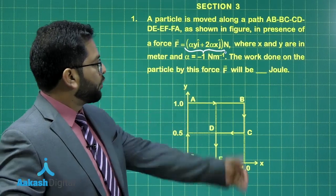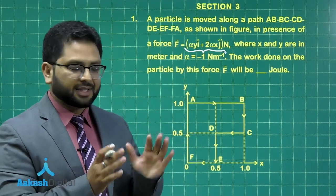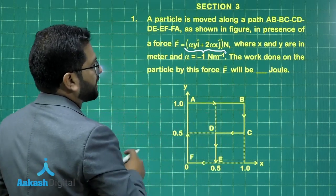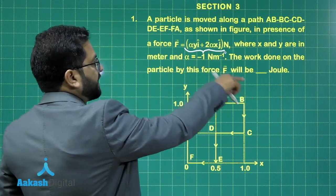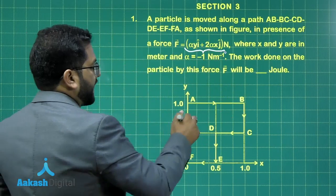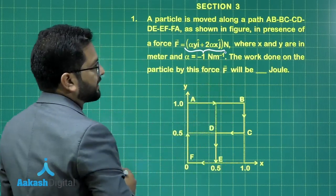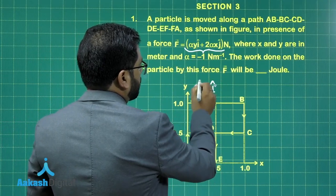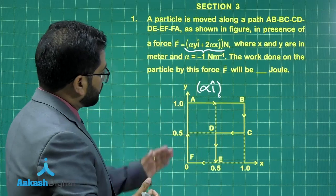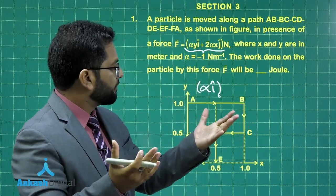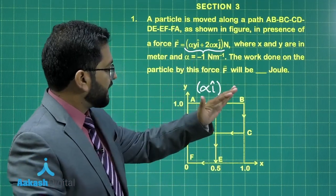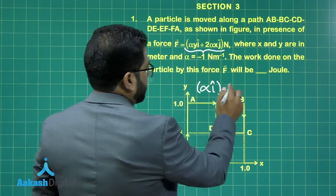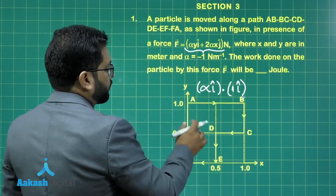Though the expression of force may seem difficult to calculate, there is a nice symmetry involved. When we move from A to B, the distance is one. I don't require the ĵ component of the force because displacement is along x. Throughout A to B, the y coordinate is constant at one. So the force responsible is simply α·y î = α î. The displacement is 1 î, giving us the work done for this segment.